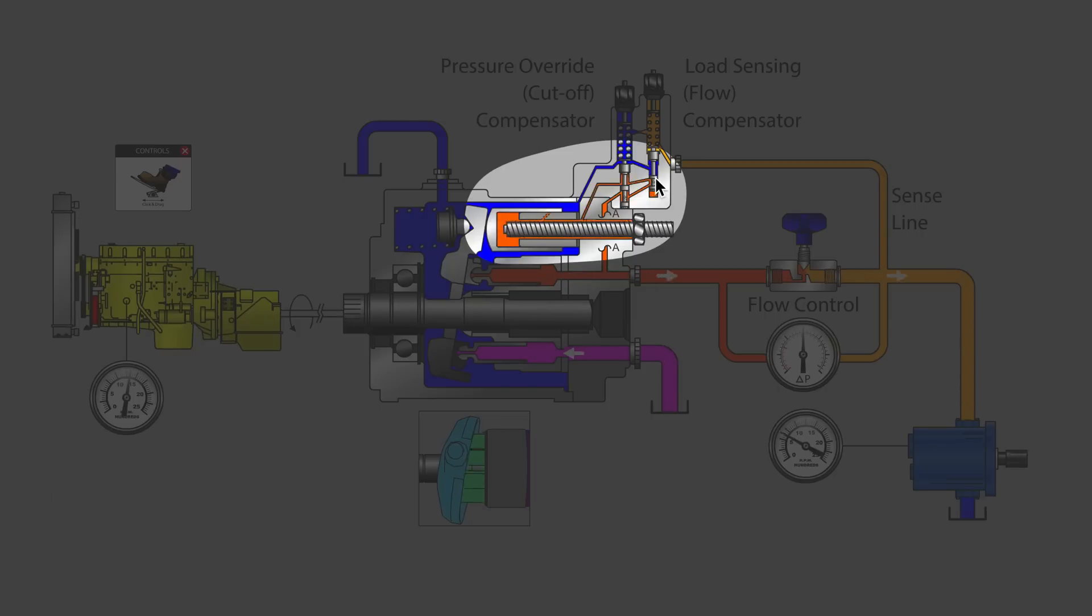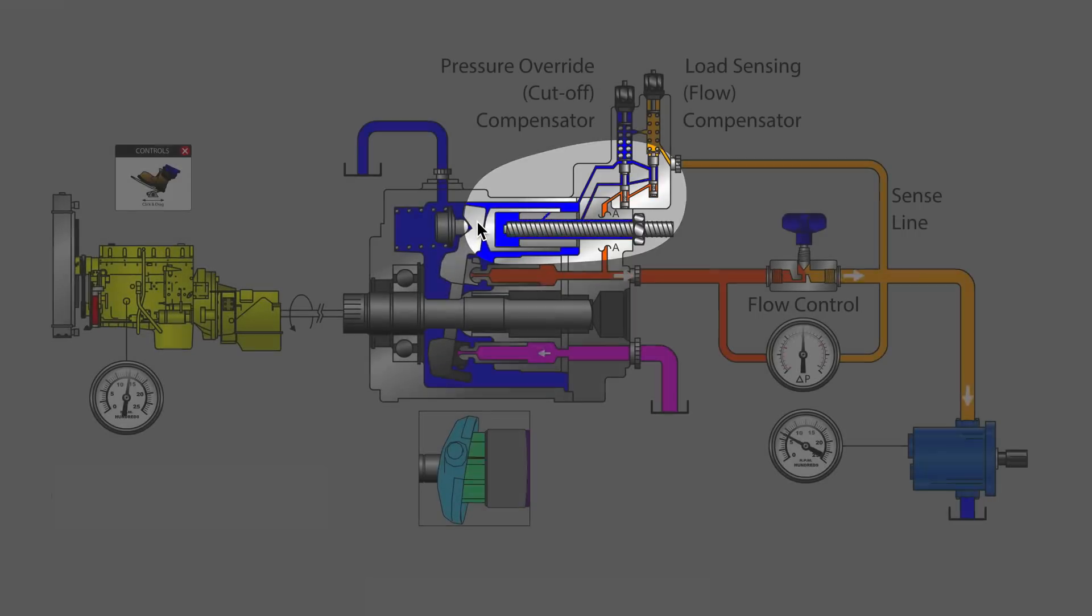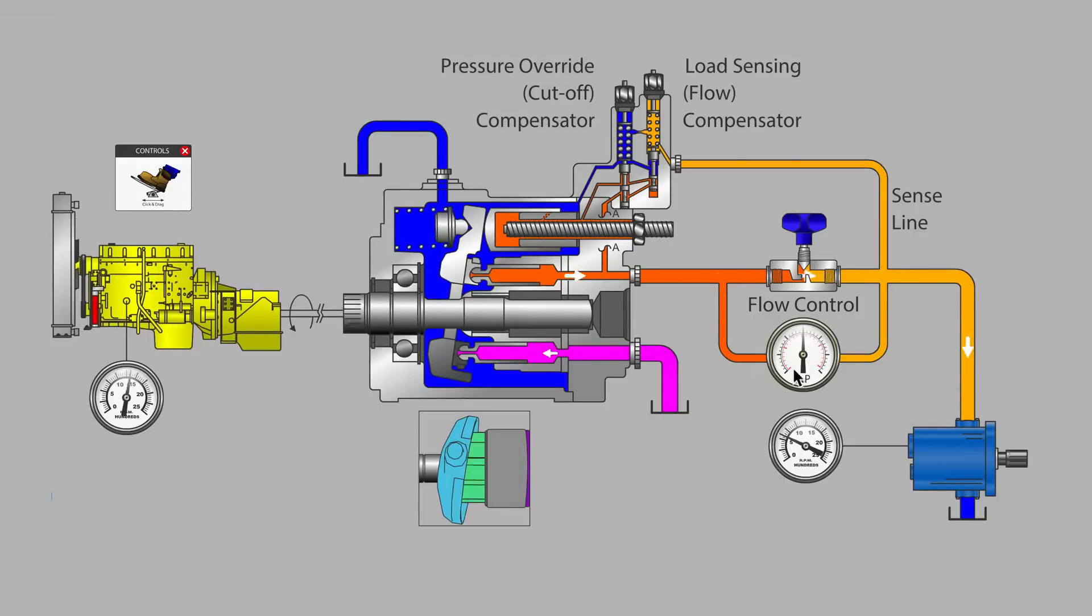The spool would pop up and direct control fluid into the control piston, destroking the pump slightly, reducing its displacement, and in so doing restoring—very quickly restoring—our desired delta P across the throttling valve, allowing our hydraulic motor to run at a very steady speed.